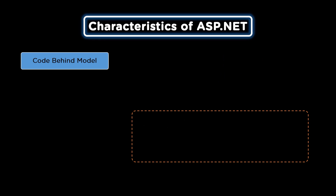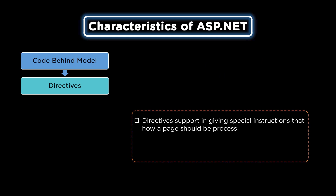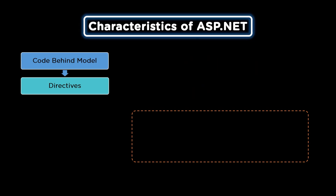The second characteristic is directives. Directives act like a support to the pages by providing special instructions to the developer on how a page should be processed. Directives also specify and enable the attribute to show how an application should be used.